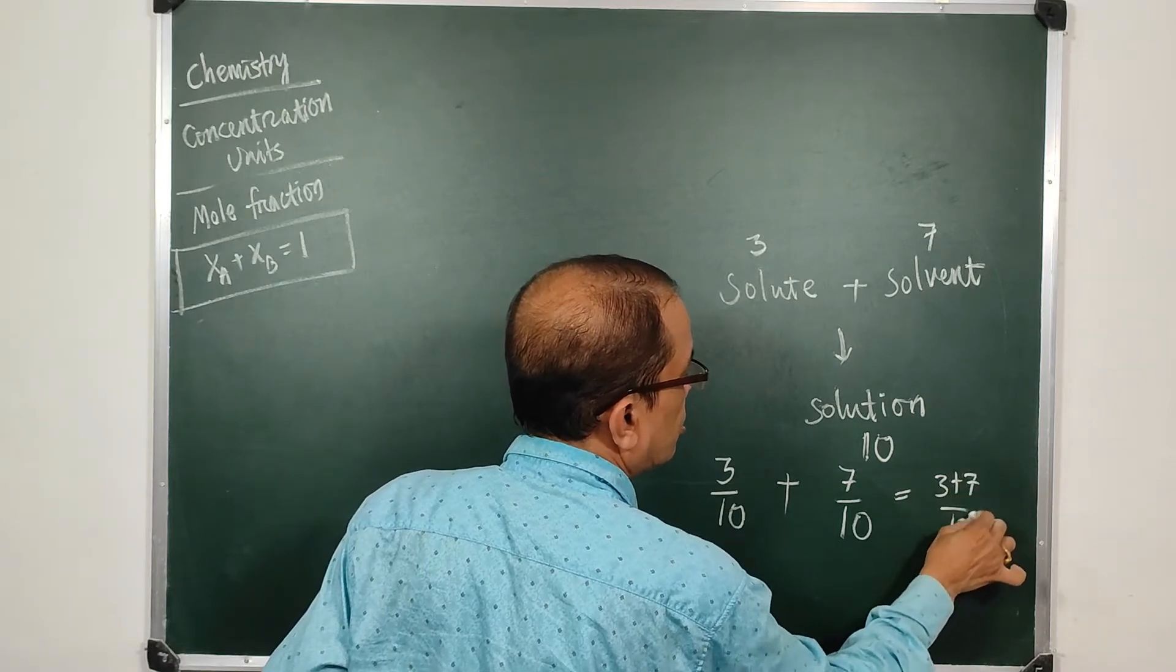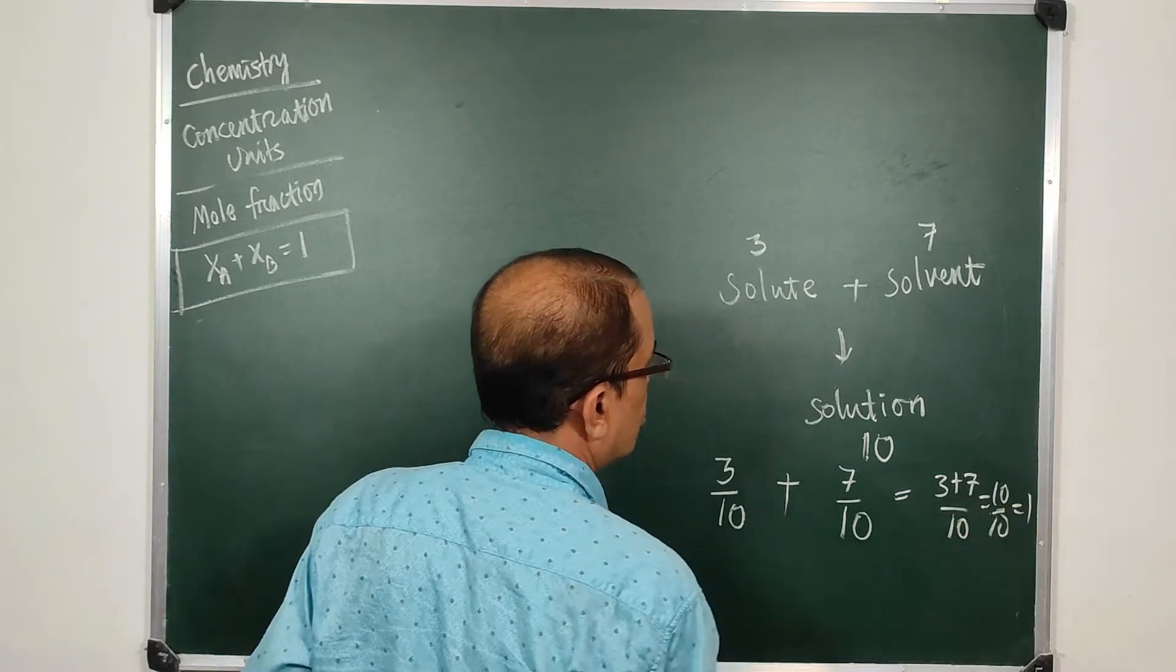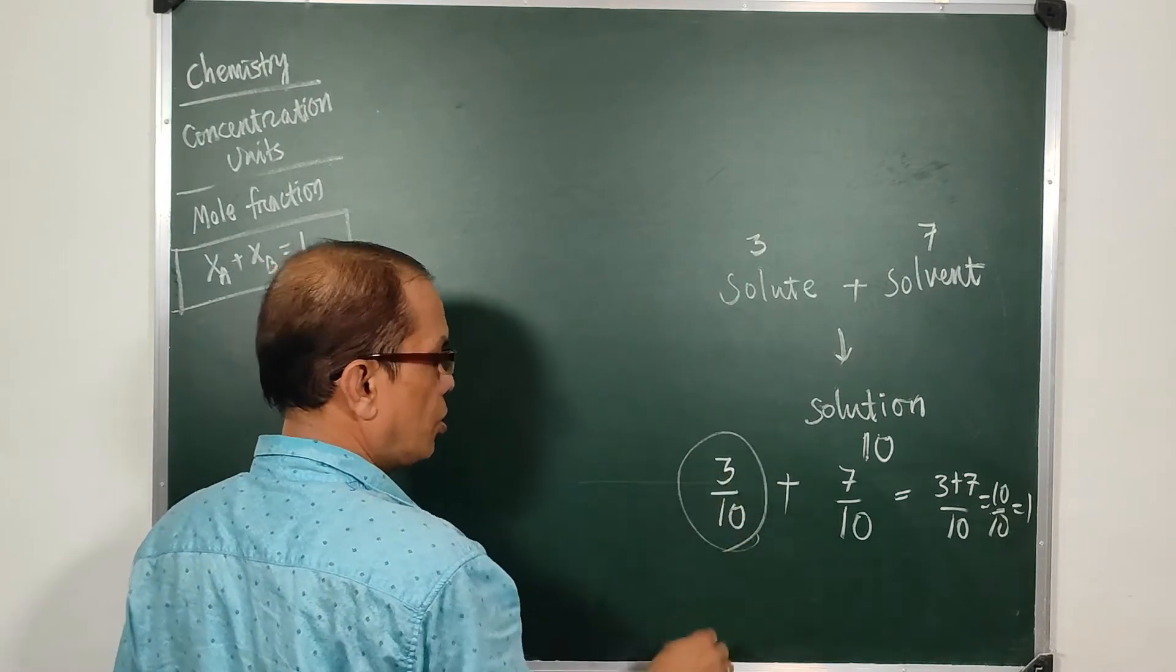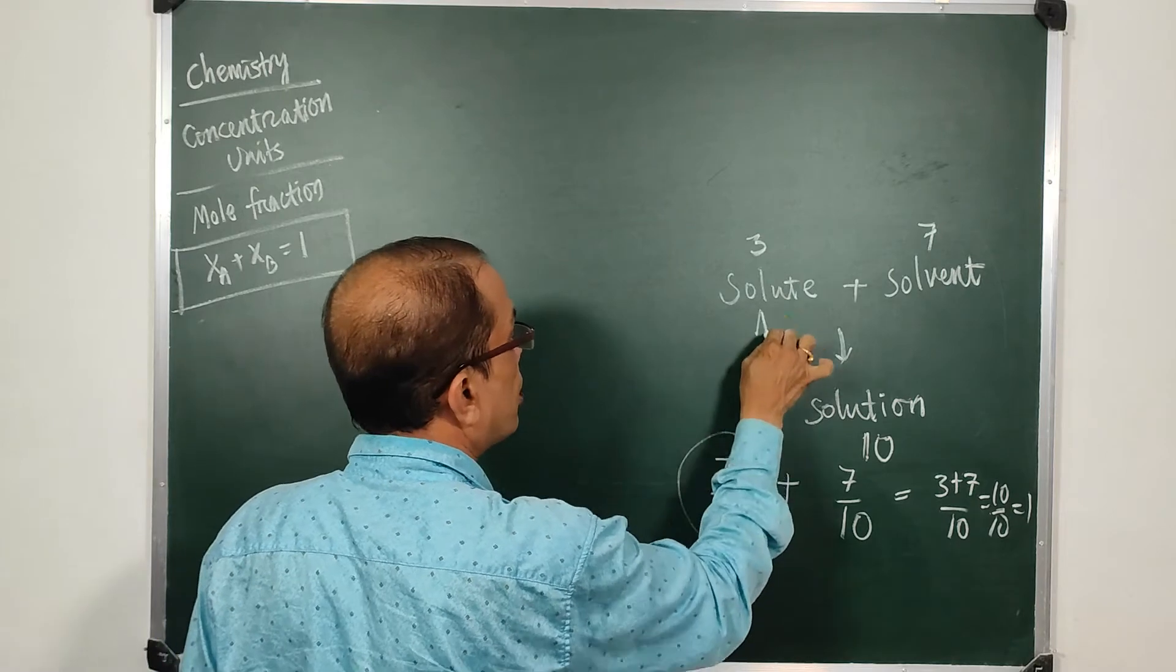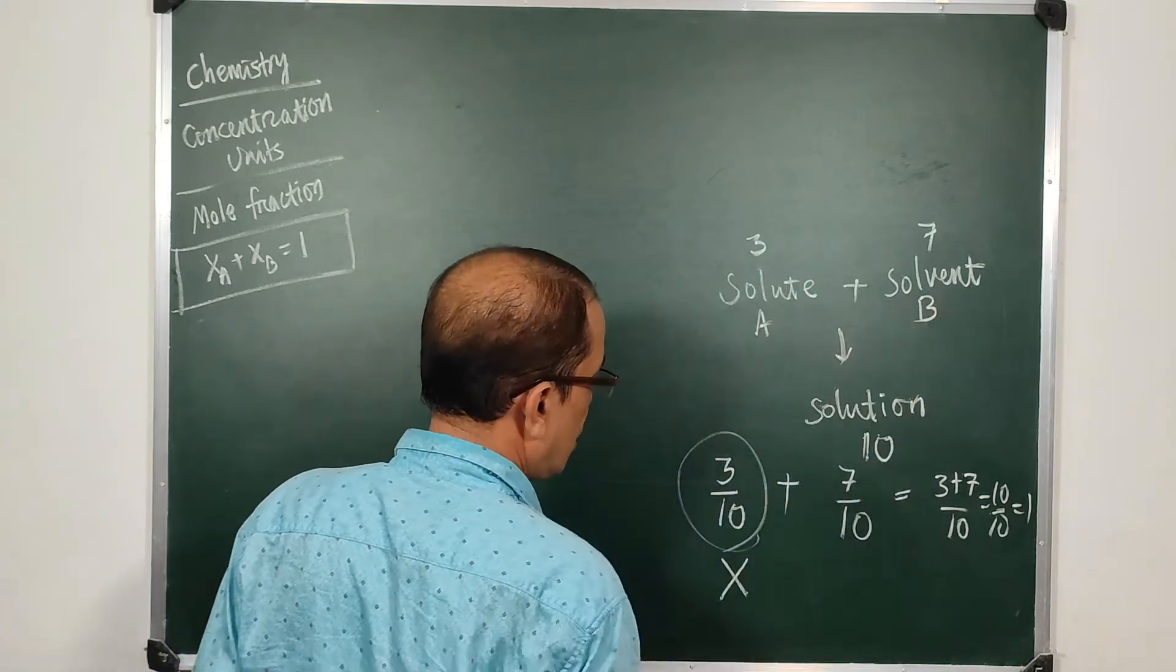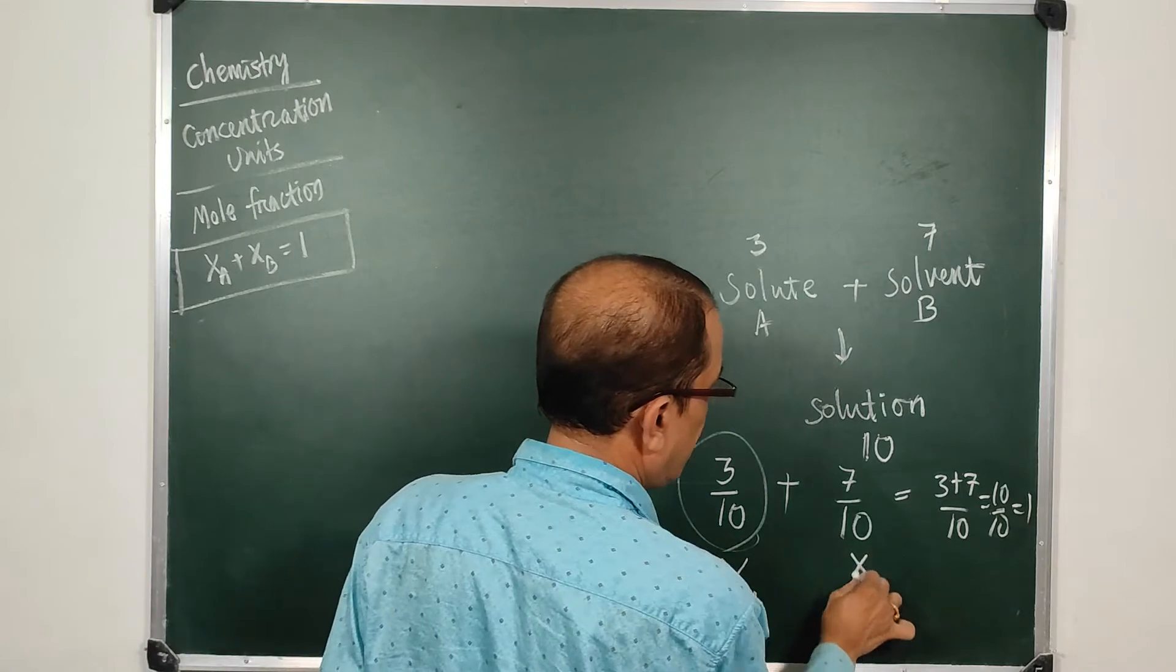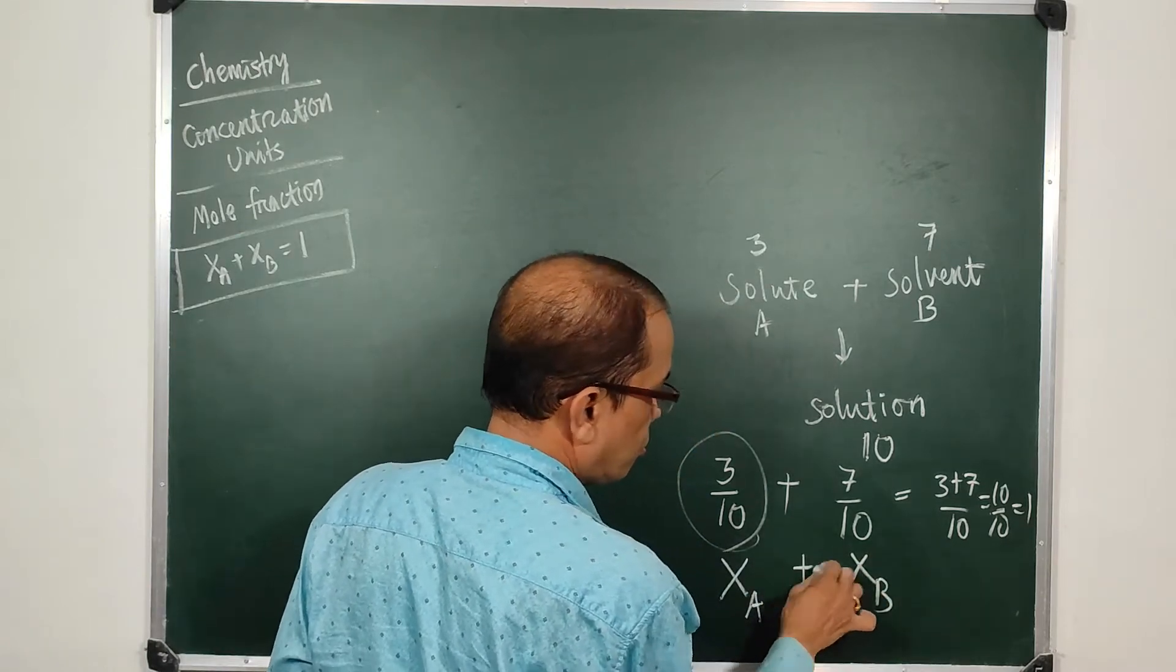and when you add them up you get one. Three plus seven by ten is ten upon ten, or one. So this part is called the mole fraction of solute. Say if this is A, this is B, then this will be called Xa and this will be Xb, and sum of these two is one.